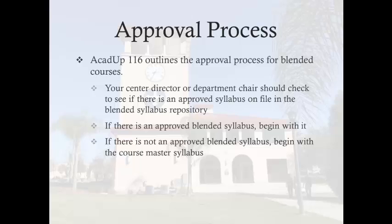The first step in the process is to determine if there already is an approved blended syllabus for the course you are preparing to teach. If there is an approved blended syllabus in the repository, you will use that as the basis for your section syllabus. If there is not an approved blended syllabus, you will begin with the course master syllabus. All approved blended and master syllabi are housed under the intranet, accessed via the My St. Leo portal.